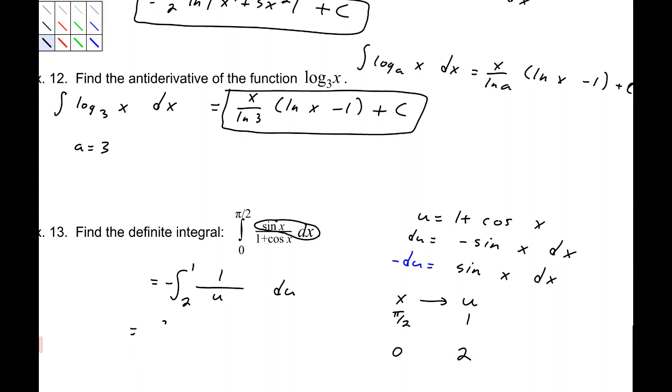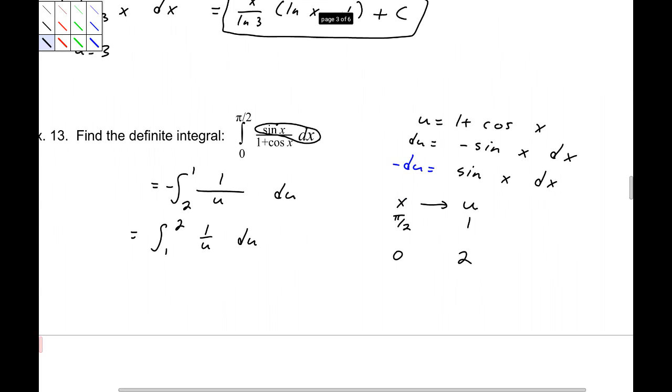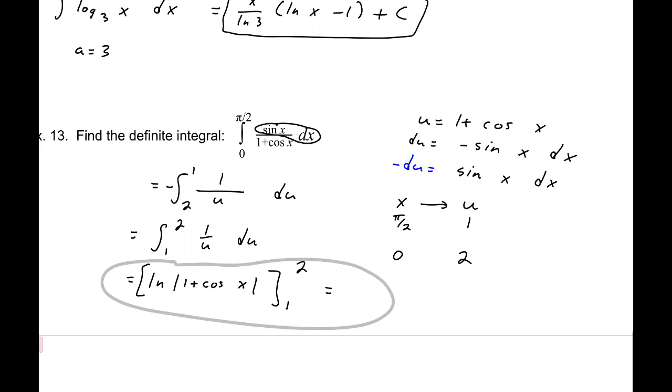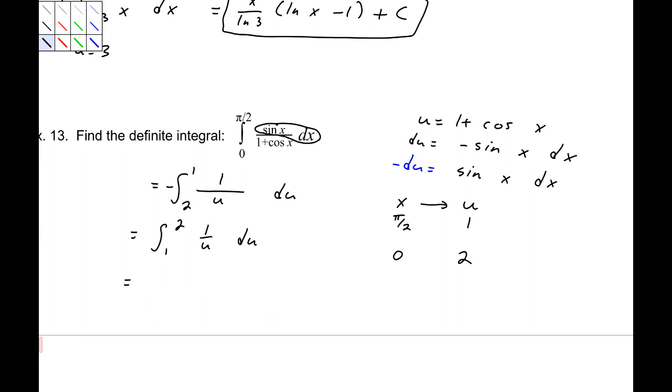Now, I'm going to change this to, from 1 to 2, of 1 over u, du. So, this would equal the natural log of the absolute value of u. I'm going to go ahead and replace this as 1 plus cosine x. And we're evaluating this from 1 to 2. Now, if I plug 2 in, oh, you know what? Don't do that. Don't do that. This would be the natural log of u evaluated from 1 to 2. I changed my limits, so I don't need to do that. So, this would be the natural log of 2 minus the natural log of 1, which is the natural log of 2. And since those are both positive, the absolute value bars do nothing for us.